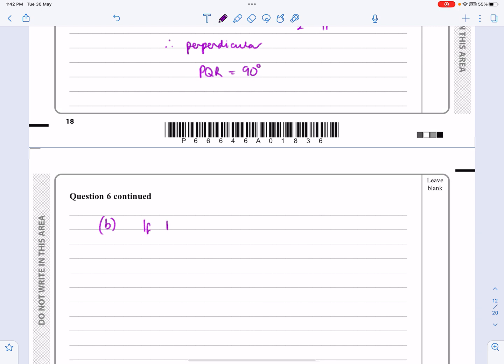So, if PQR equals 90, then PR is a diameter. C equals, sorry not C, what we're going to call it, let's call it centre of C. C is the actual circle, that centre of C equals midpoint of PR.